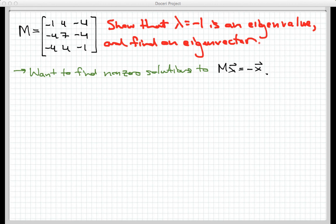So let's work with that equation over here, and we will first of all add ⃗x, the vector, to both sides. So M⃗x plus ⃗x equals the zero vector.